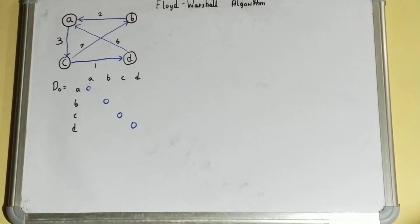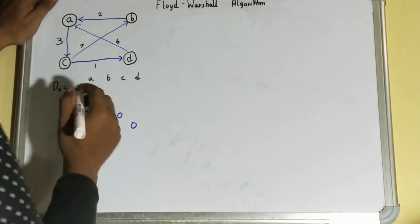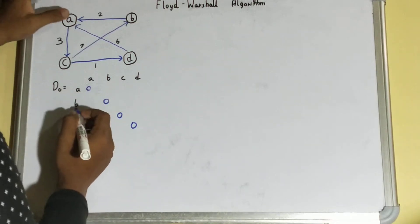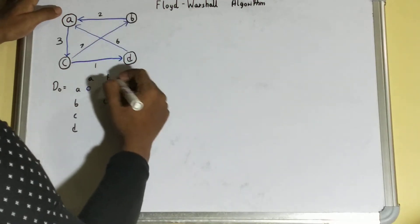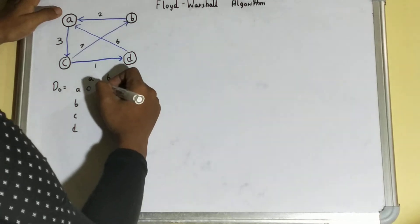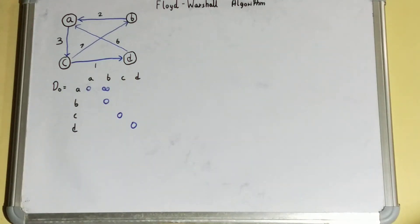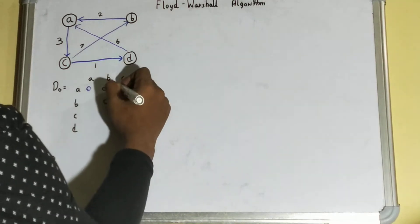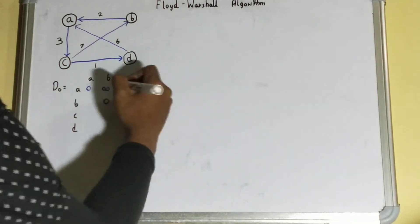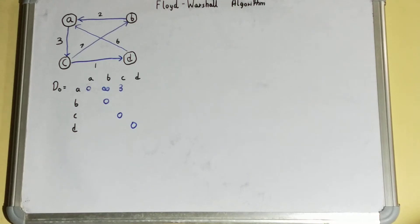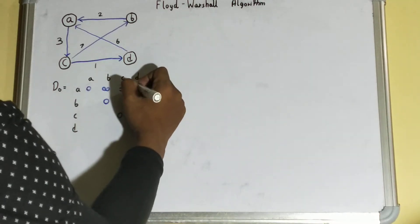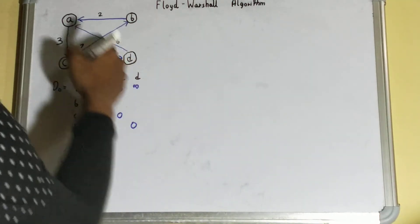If we don't have a path between two vertices, we keep infinity. So A to B is infinity, we'll keep infinity. A to C is three. A to D is infinity because there is no edge — remember this is a directed graph.